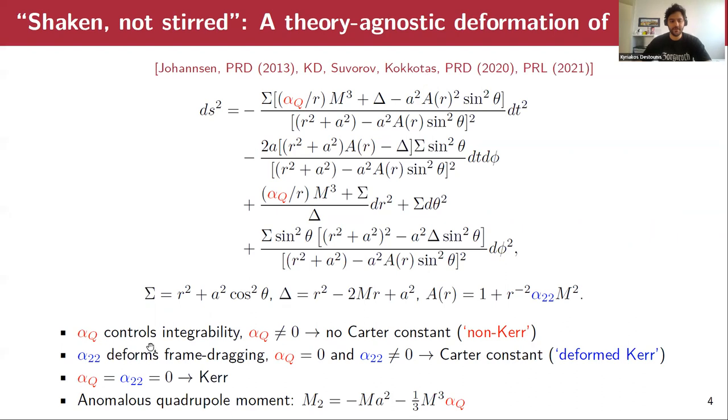Of course, we obtain Kerr at this limit where both deformations are zero, and the anomalous quadrupole moment has an extra term added to the standard Kerr quadrupole moment, which depends on alpha-q.